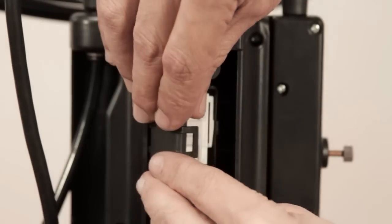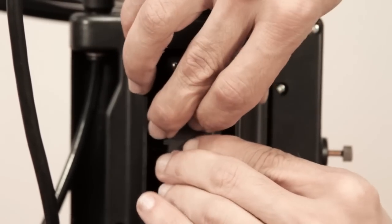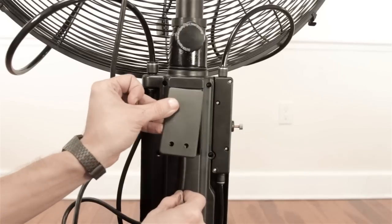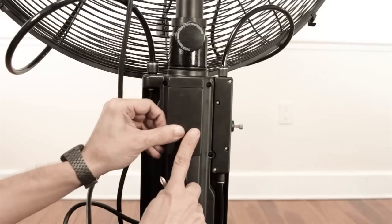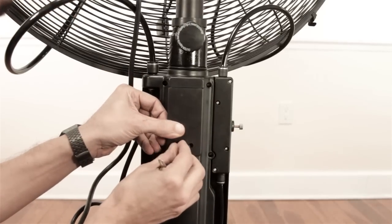Step 14. Secure the connection with the electrical housing lid supplied in bag 5. Then use the screws and lid provided to you in bag 5 to close the Brisa fan pole assembly.